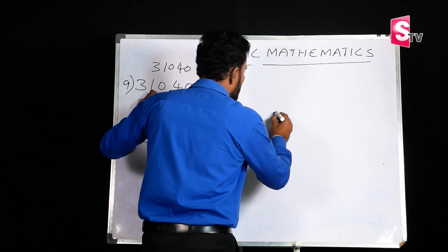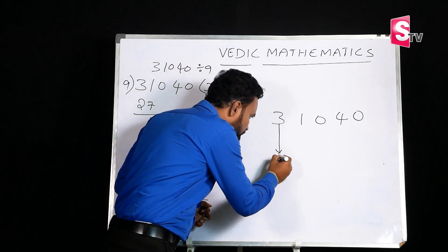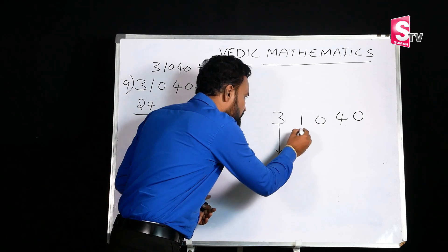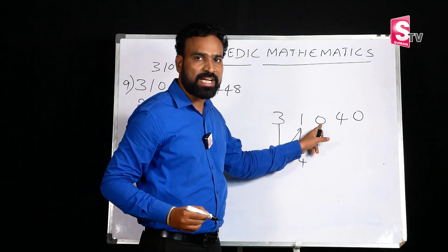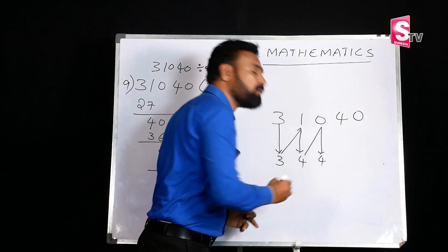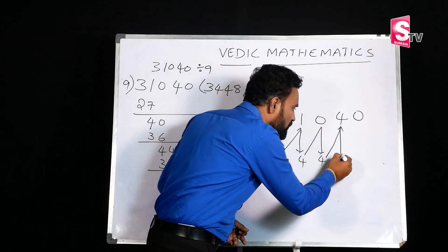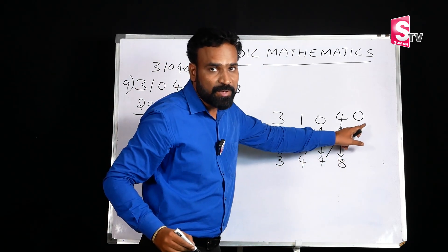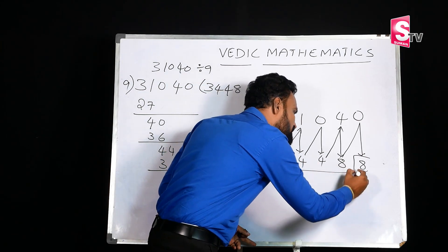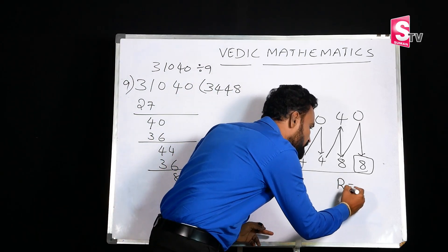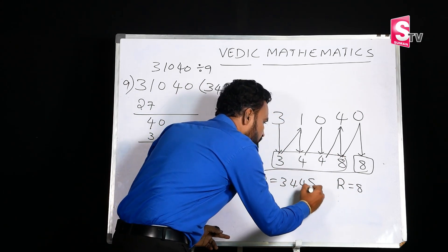For 31040 divided by 9: write the digits 3, 1, 0, 4, 0. First, drop the first number 3. Next, 3 plus 1 equals 4. Next, 4 plus 0 equals 4. Next, 4 plus 4 equals 8. Next, 8 plus 0 equals 8. The last number, 8, represents the remainder. The remaining digits — 3, 4, 4, 8 — represent the quotient. So the quotient is 3448 and the remainder is 8.